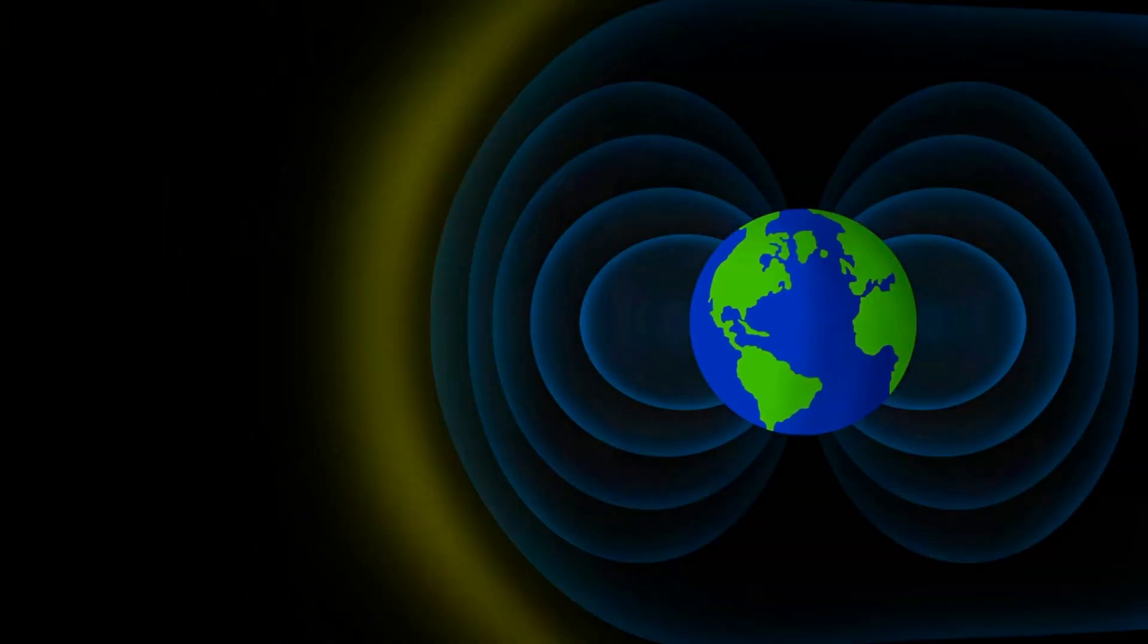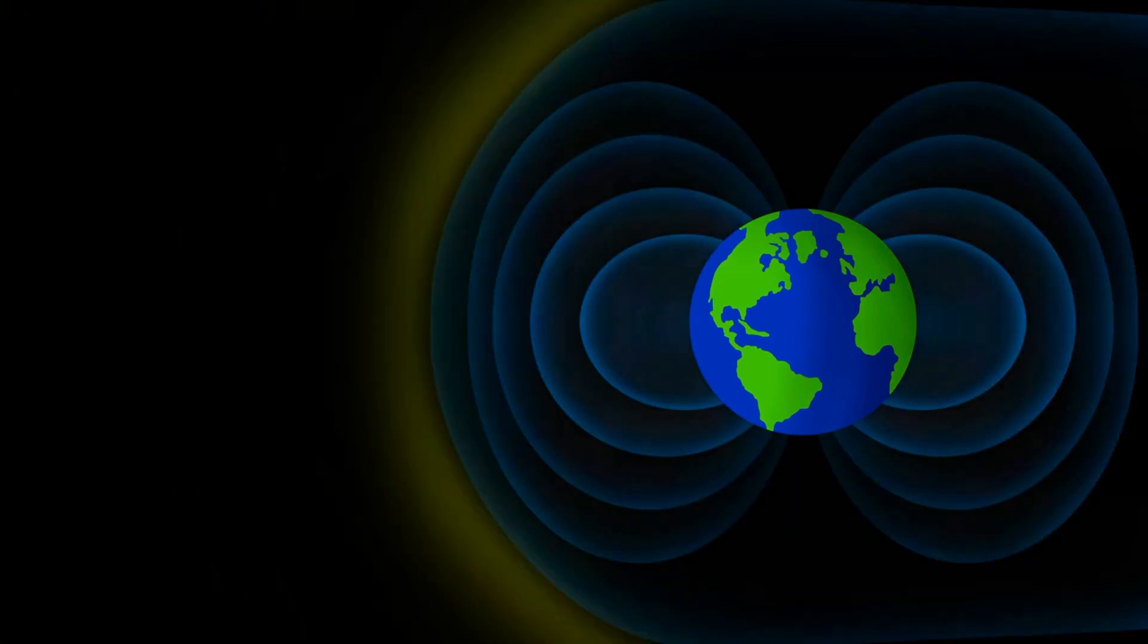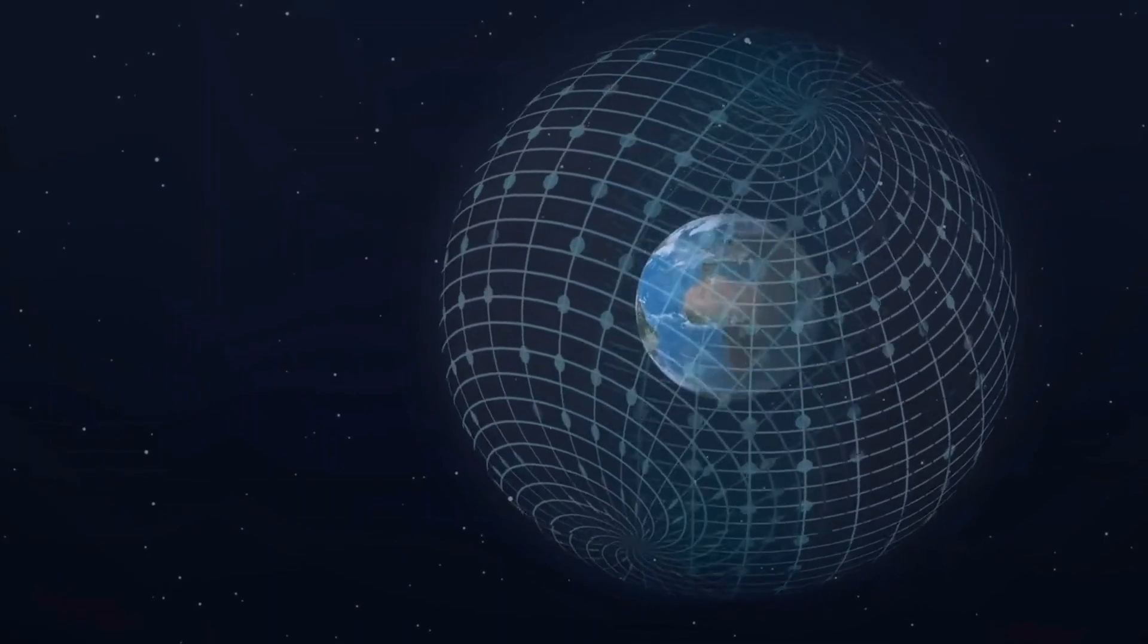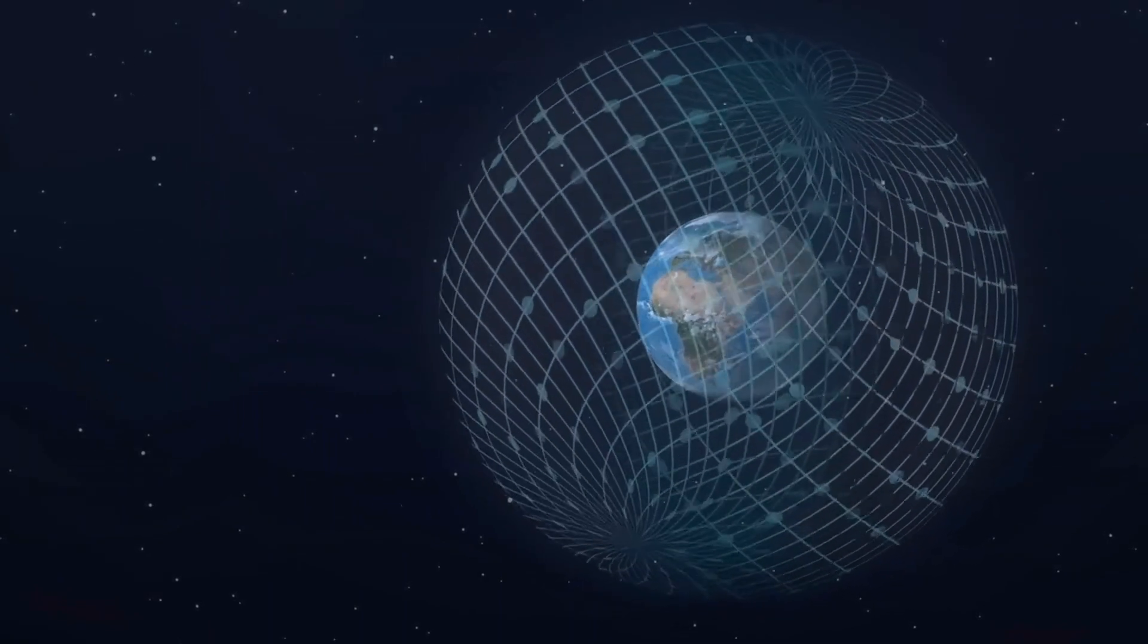The magnetosphere acts like a giant shield, protecting the Earth from harmful solar radiation and cosmic rays. Think of it as a protective bubble that deflects dangerous particles away from our planet.